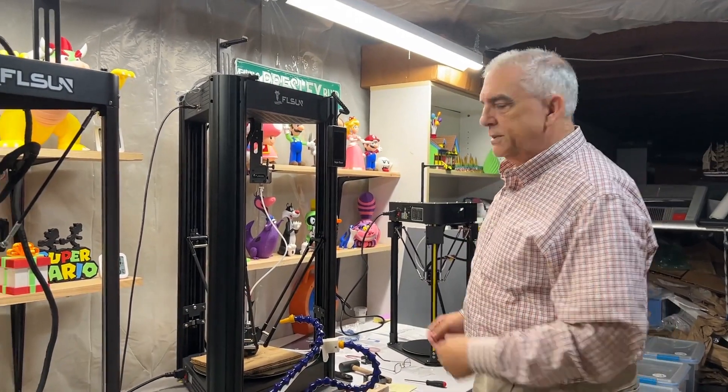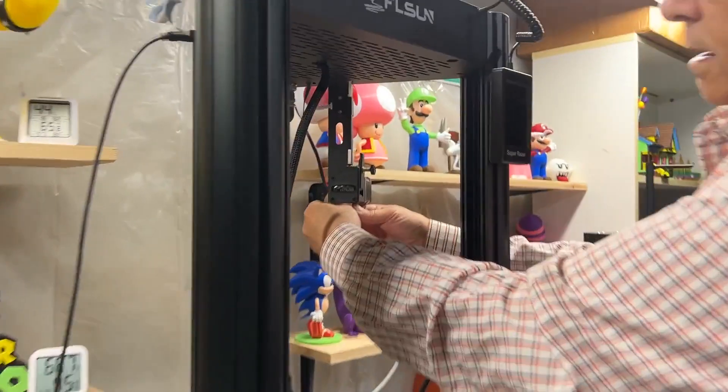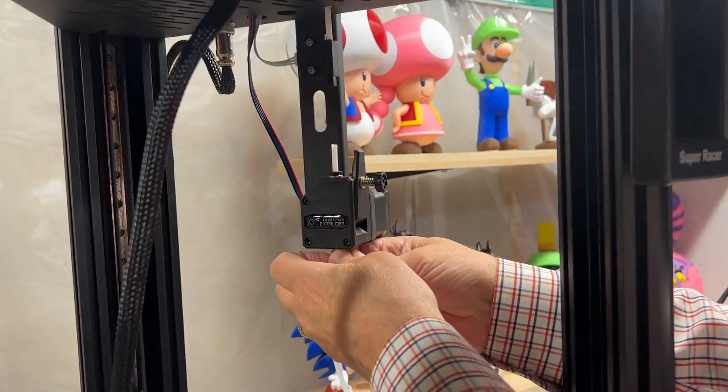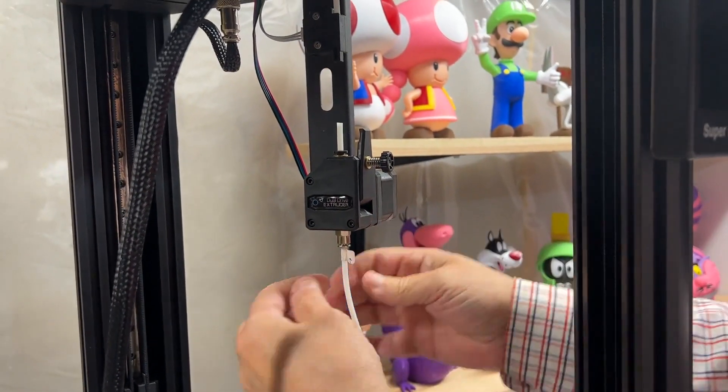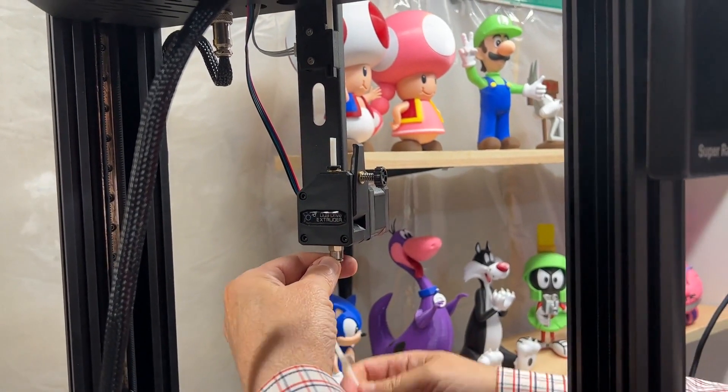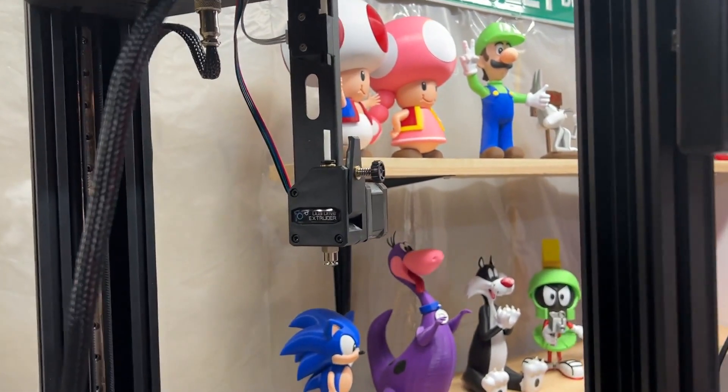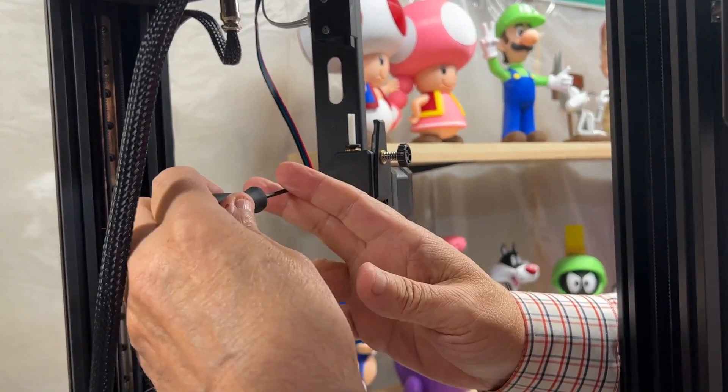Alright, so the first thing we're going to do is take off the PTFE tube clip, push that up, pull out the tube, then we're going to take the extruder off.